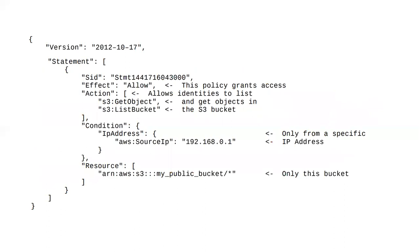Here we have an AWS JSON document shown. This is a policy document. SID is a statement ID — it is a statement that you have allowed.